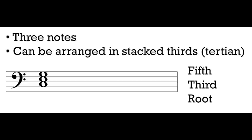Each of the three notes in the triad has a particular name. The bottom note we're going to call the root. When we stack these triads up in thirds, the note that is on the bottom we're going to call the root. The note in the middle is a third above the root and so we're going to call it the third. And the top note when we stack a triad in thirds is going to be called the fifth. The root, the third, and the fifth — these are the three members that make up all the triads we're going to be talking about.